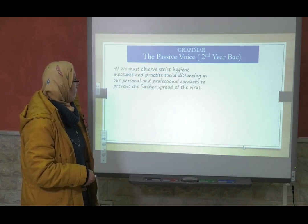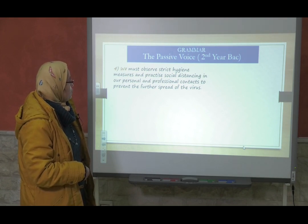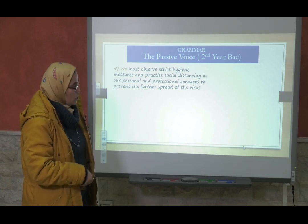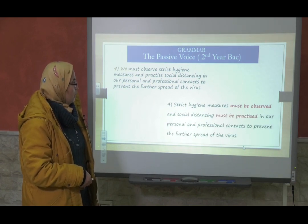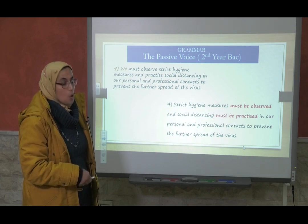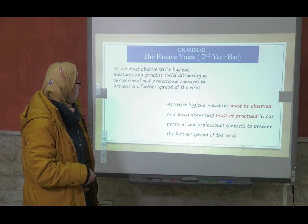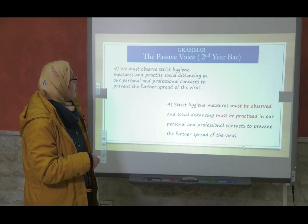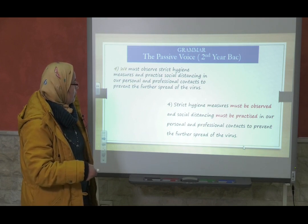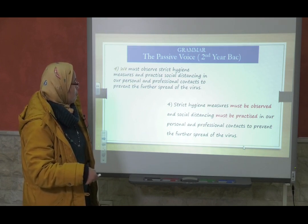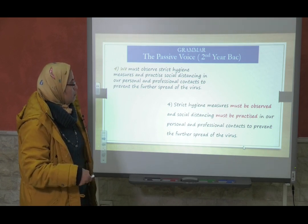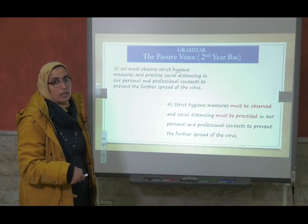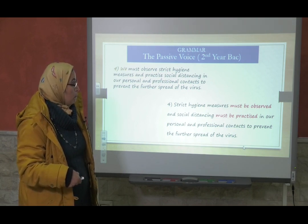Another example. 'We must observe strict hygiene measures and practice social distancing in our personal and professional contacts to prevent the further spread of the virus.' It's changed into: 'Strict hygiene measures must be observed and social distancing must be practiced.' Strict hygiene measures, which was the object, is placed in the position of the subject. Plus 'must be' — so modal plus to be. We insert to be, and 'observe' becomes 'observed' in the past participle. The same with 'must be practiced.'